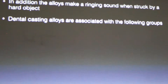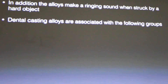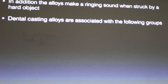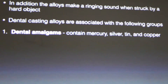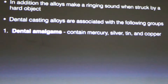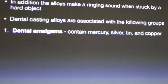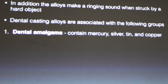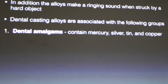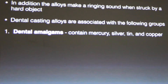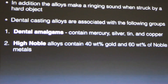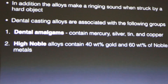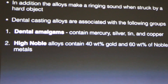The metal casting alloys are associated with the following groups. Dental amalgams contain mercury, silver, tin, and copper. Zinc can also be used, giving zinc-containing and non-zinc-containing amalgams. The main components are mercury, silver, tin, and copper.